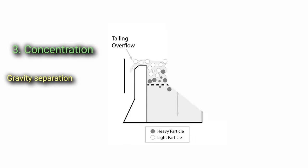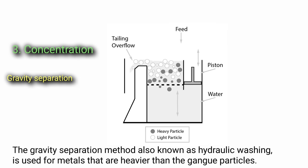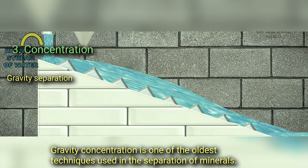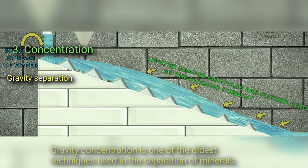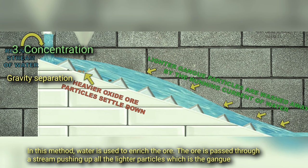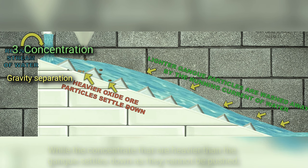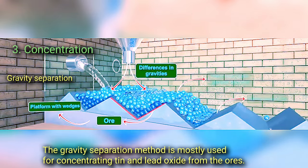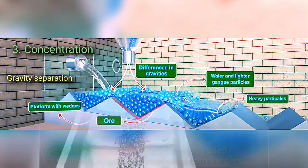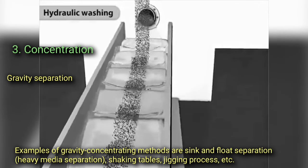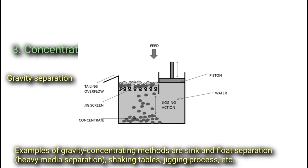Gravity separation: the gravity separation method, also known as hydraulic washing, is used for metals that are heavier than the gangue particles. It uses the difference in the density of minerals as the concentrating agent. Water is used to enrich the ore — the ore is passed through a stream that pushes up all the lighter particles (the gangue), while the heavier concentrates settle down. The gravity separation method is mostly used for concentrating tin and lead oxides. Examples include sink-and-float separation (heavy media separation), shaking tables, and the jigging process.